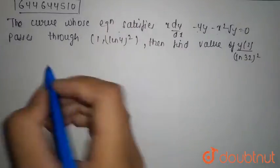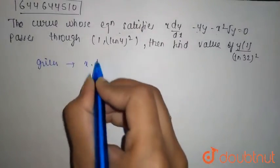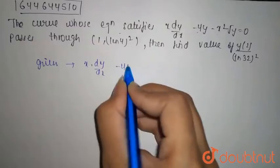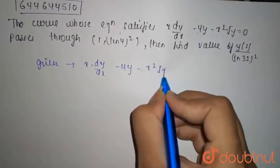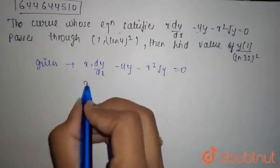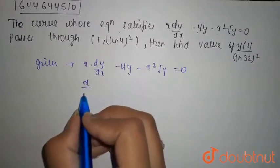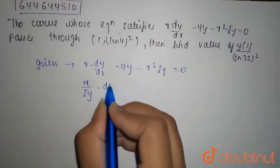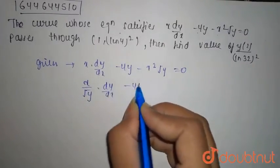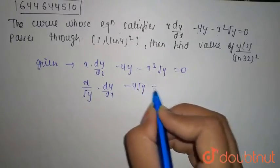Given equation is x dy/dx minus 4y minus x² root y equals 0. Dividing it by root y, it comes out to be x/root y dy/dx minus 4 root y equals x².